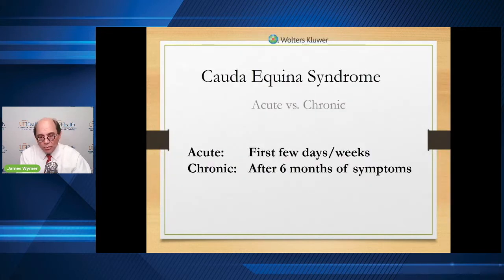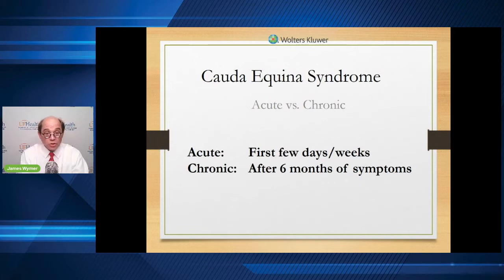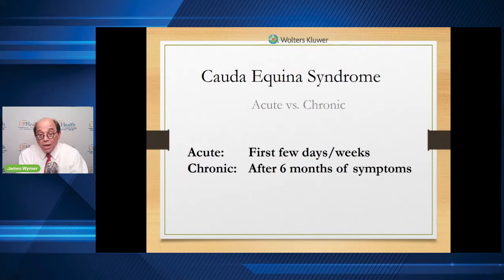We also talked about the potential causes of cauda equina — trauma, infectious, cancers, and a lot of different things. A percentage of people will be idiopathic, meaning we never find the cause; they may have normal imaging. The next question is what's acute versus chronic. A lot of studies focus on acute because those are easier — somebody who shows up in the emergency room after a car accident or with a sudden disc herniation. Chronic is a different question.